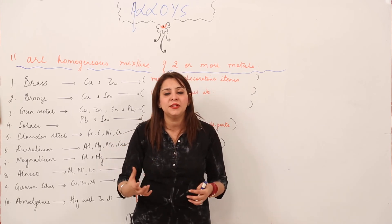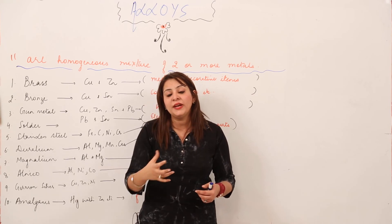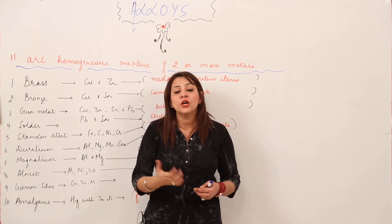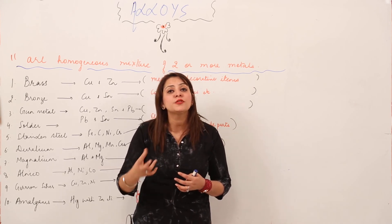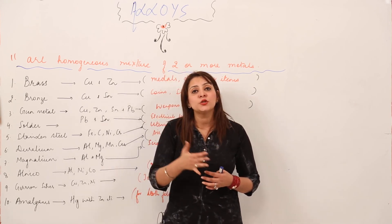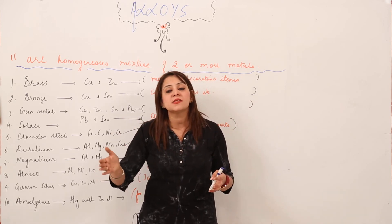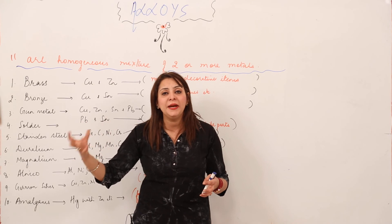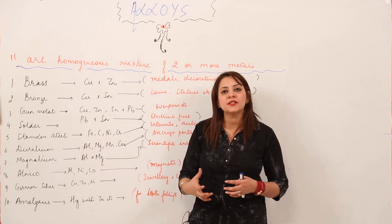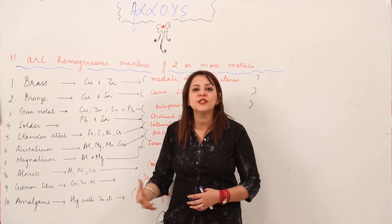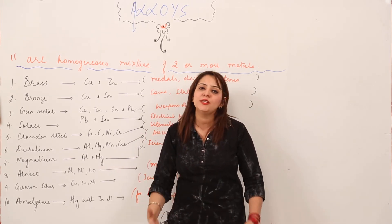The gold available in the market is not completely 24 carat because 24 carat gold is too soft to be used for making ornaments. It is actually 22 carat gold, in which 22 parts are gold and 2 parts are some other metal that makes it hard. This is how alloys perform different functions in different fields, giving us many useful articles in our daily routine.